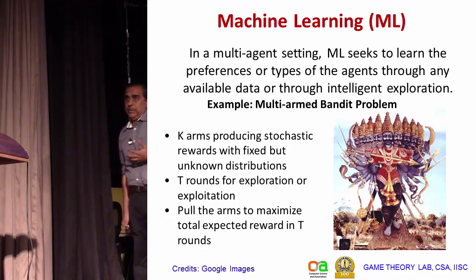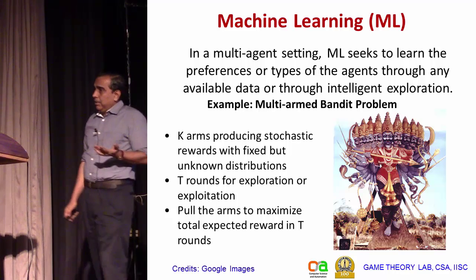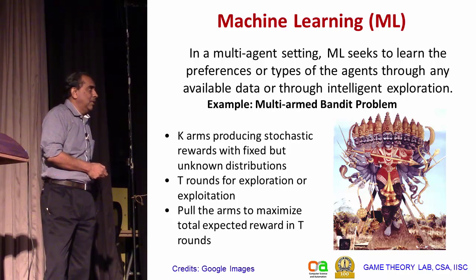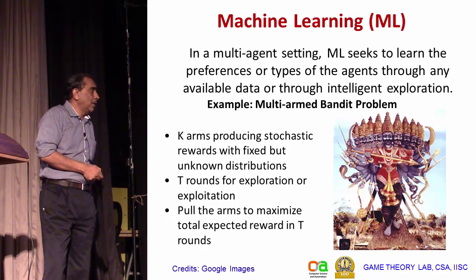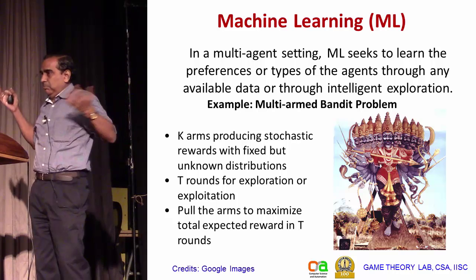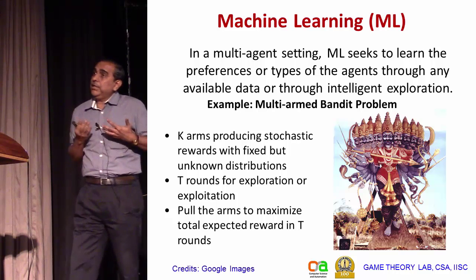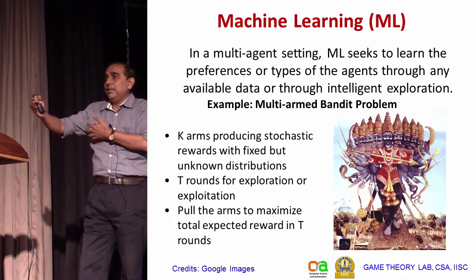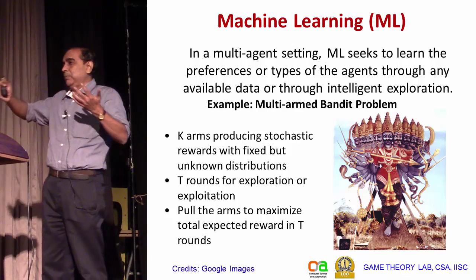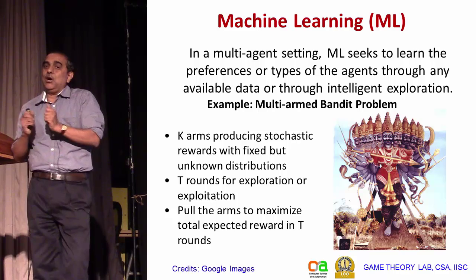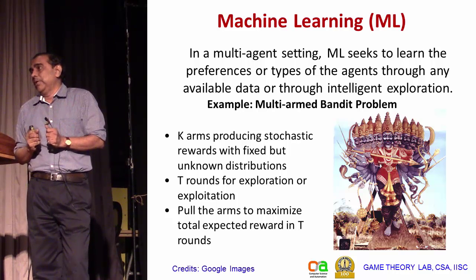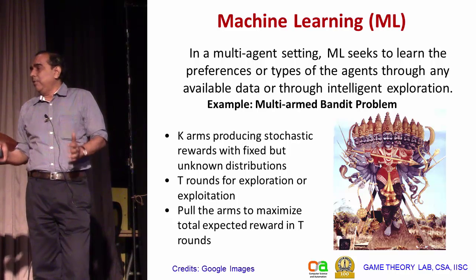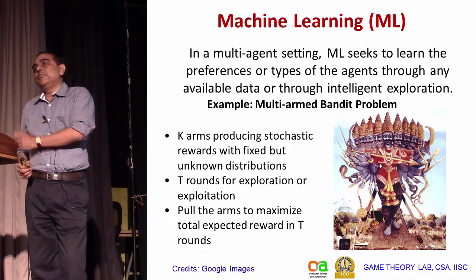You will have known about the classical multi-arm bandit problem, where the different arms produce stochastic reports with fixed but unknown distributions. There is a total of capital T rounds—maybe a thousand rounds—over which you have to explore the rewards produced by the different arms and learn the expected rewards as quickly as possible, then keep pulling only the arm which produces the highest reward, so that over those T rounds you maximize the total accumulated reward.